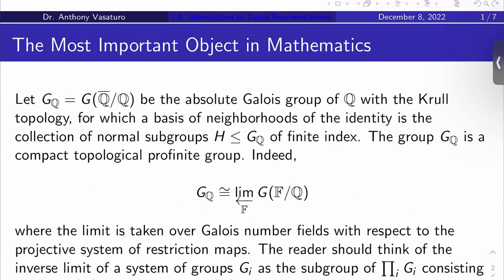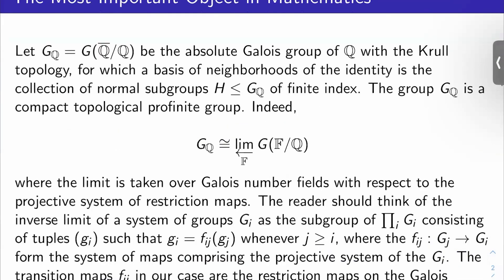First of all, the most important object in mathematics, arguably, is the Galois group of Q. It's the absolute Galois group of Q, given the Krull topology, for which a basis of neighborhoods of the identity is just the collection of normal subgroups H of finite index in the group. By translation, you know what the whole topology is. So this is a compact topological profinite group.